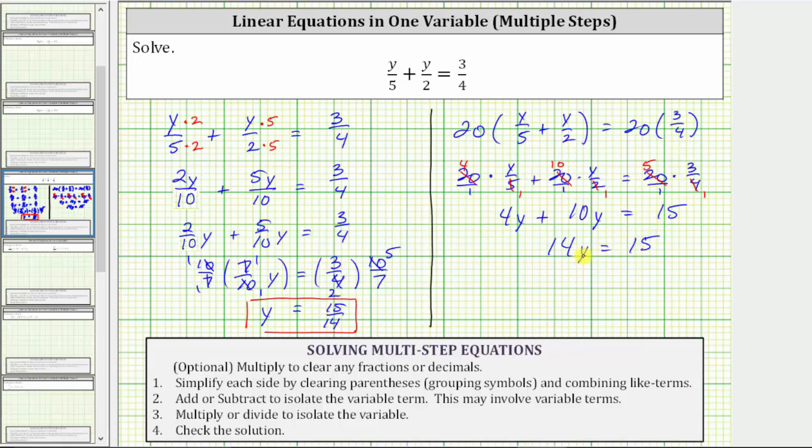The last step is to multiply or divide to isolate y. 14y means 14 times y. To solve for y, we divide both sides by 14. Of course, we get the same solution, y equals 15 fourteenths.